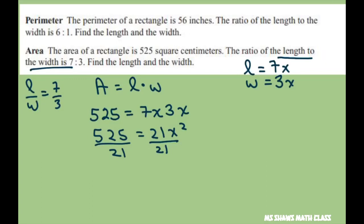And that gives you 25 equals X squared. You square root both sides. Don't forget to put the plus and minus, so this will be plus or minus 5 equals X. However, we're only going to take the positive because length and width can only be positive.